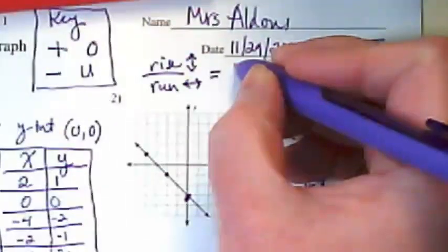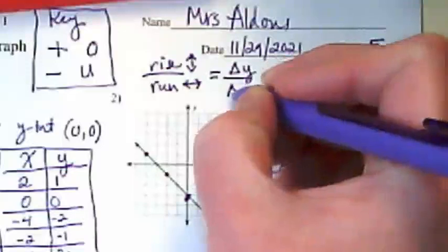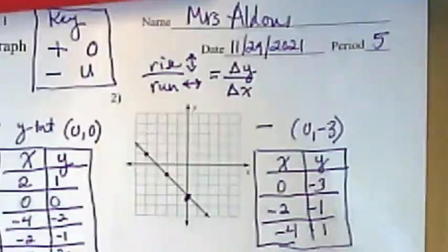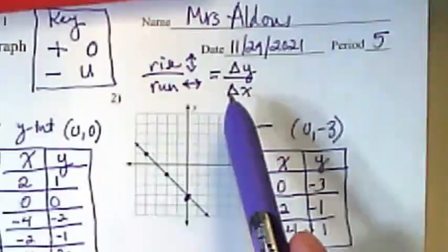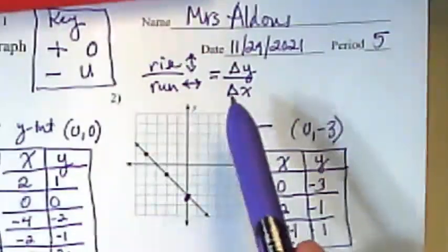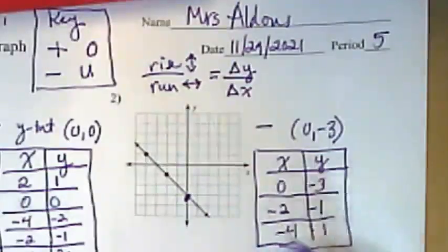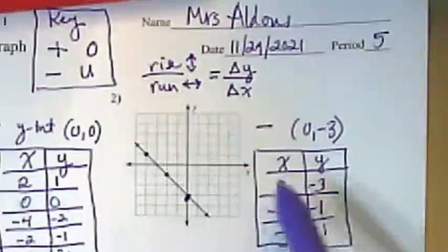This is also known more mathematically as the change in y over the change in x. We'll talk about the change part later, but if I'm changing something in mathematics, I'm typically subtracting it. And that's where these numbers in this table can come into play later.